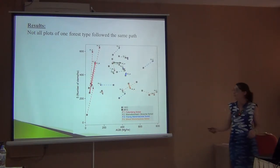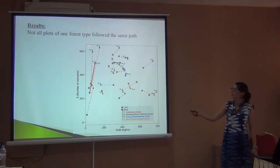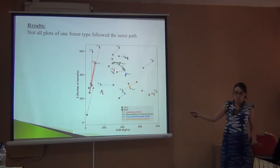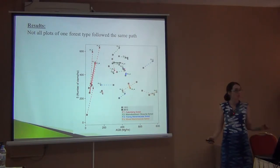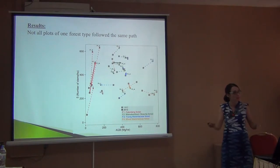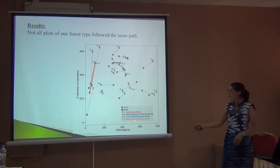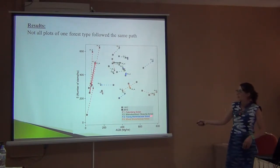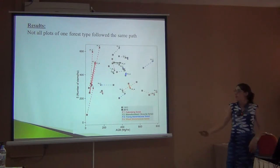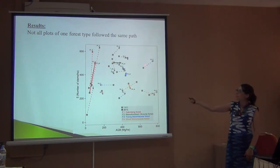We look at number two — the ones that are already a bit bigger. These barely increase in any stems; they mostly move in this direction. Trees, no matter how many they had, they went right — they all got very fat. So we can see the dynamics in the two types of forest were different.